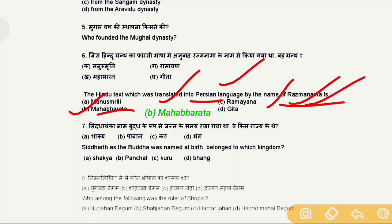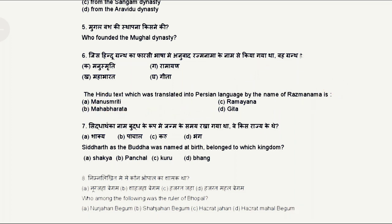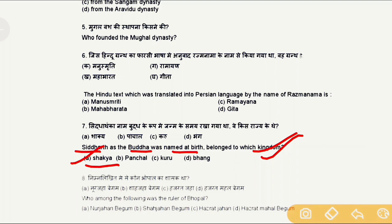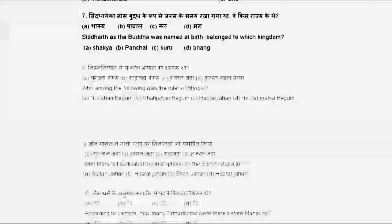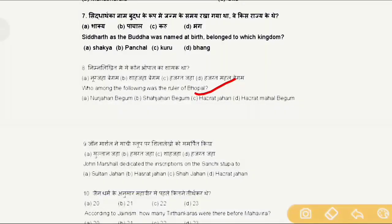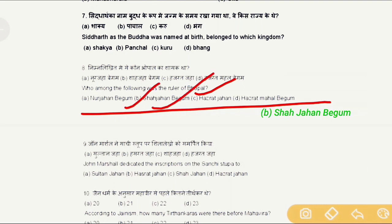Question 7: Siddhartha, as the Buddha was named at birth, belonged to which kingdom? The correct answer is option A, Shakya. Question 8 (announced as Q9): Who among the following was the ruler of Bhopal? The correct answer is option B, Shah Jahan Begum.